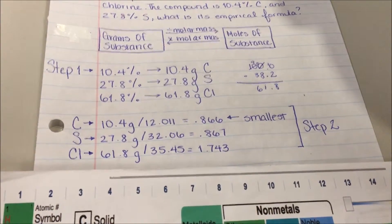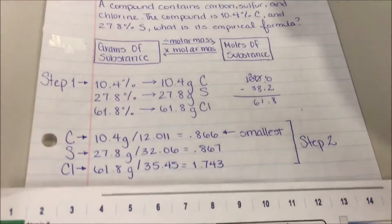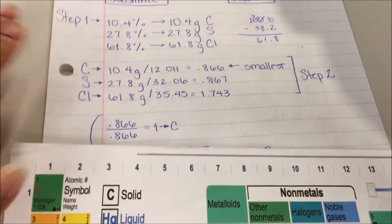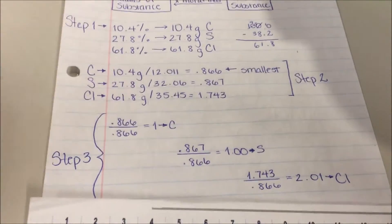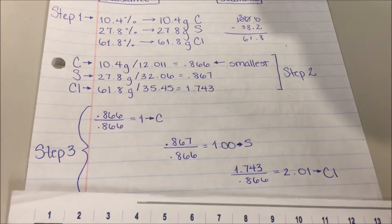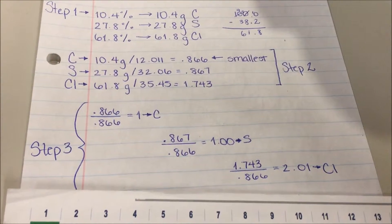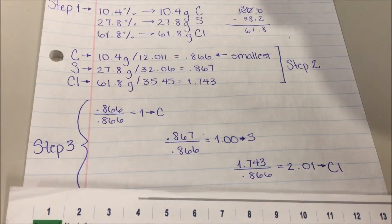Since carbon has the smallest, we use this to divide all of them. So carbon, we would get 1. Sulfur, we would get 1.00. And for chlorine, we would get 2.01.